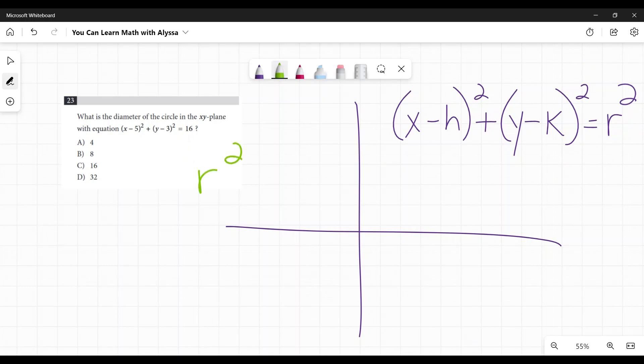So the radius squared is equal to 16. So take the square root of both sides. I would get r equals 4. And if the radius is 4, what is my diameter? It is B, 8.